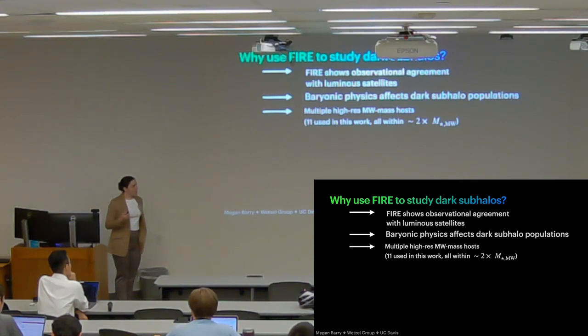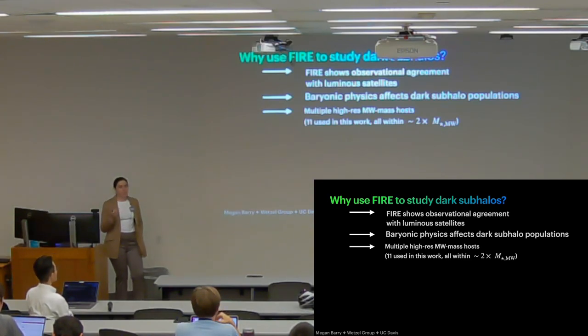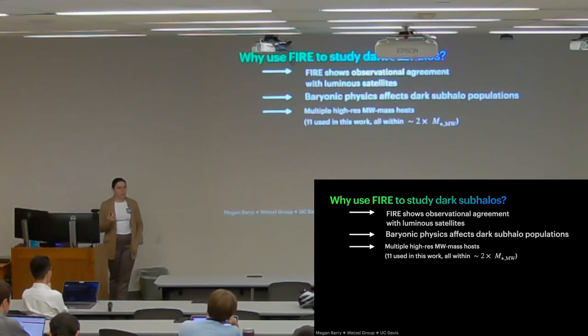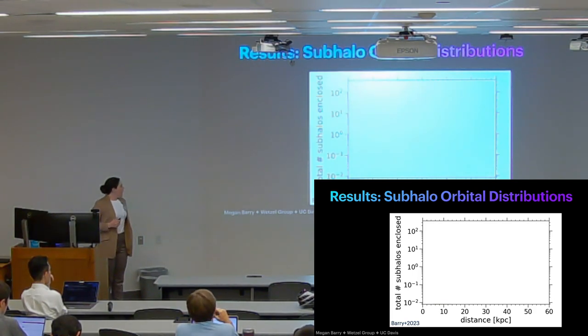One more thing to point out is that we also have multiple high-resolution milky way mass hosts. So not only can we show results for one galaxy, but we can show some statistics across our 11 hosts. We selected the 11 most milky way like by stellar mass, so all the hosts used in this work are within a factor of two of the stellar mass of the milky way.